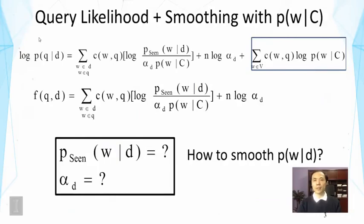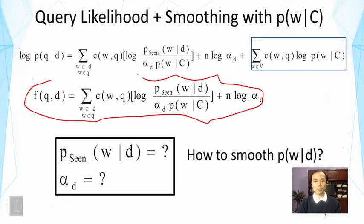This is a slide from a previous lecture where we show that with the query likelihood ranking and smoothing with the collection language model, we end up having a retrieval function that looks like the following. This is the retrieval function based on these assumptions that we have discussed. You can see it's a sum of all the matched query terms here. Inside the sum, it's the count of the term in the query and some weight for the term in the document. We have tfidf weight here and then we have another constant here in the end.